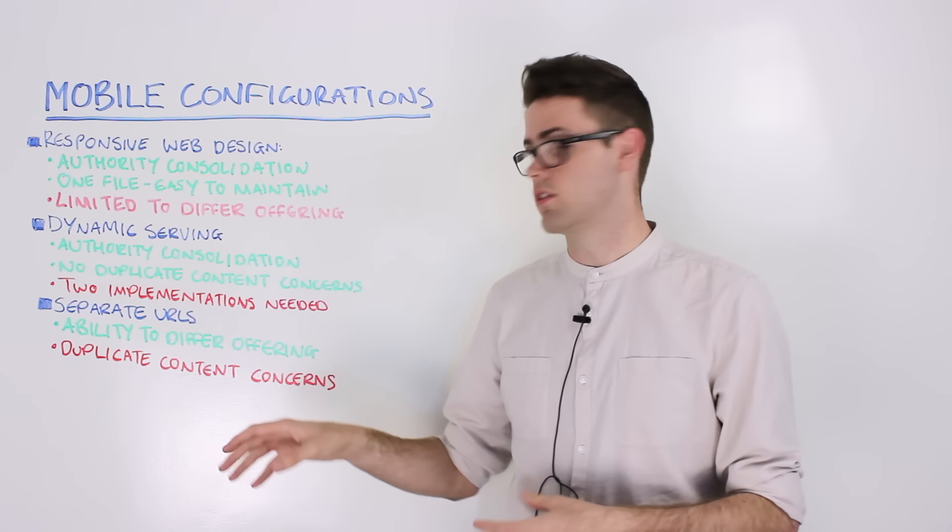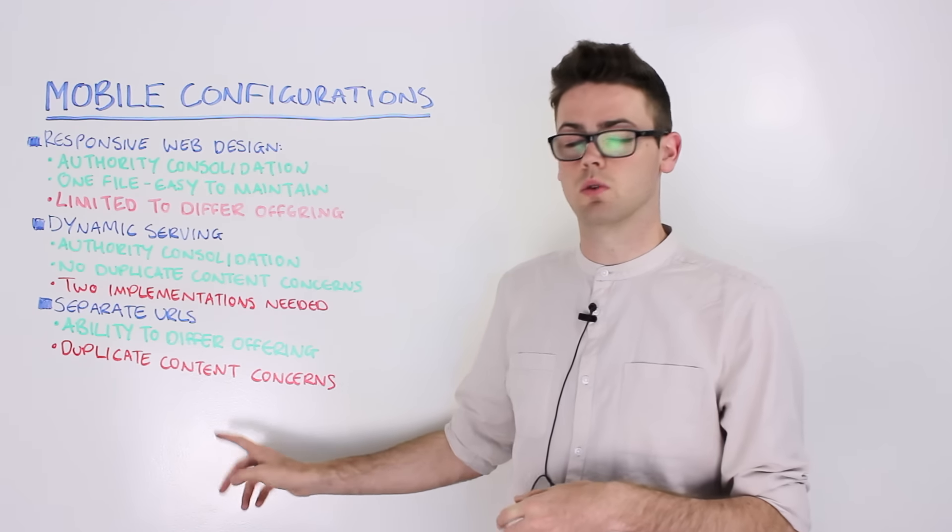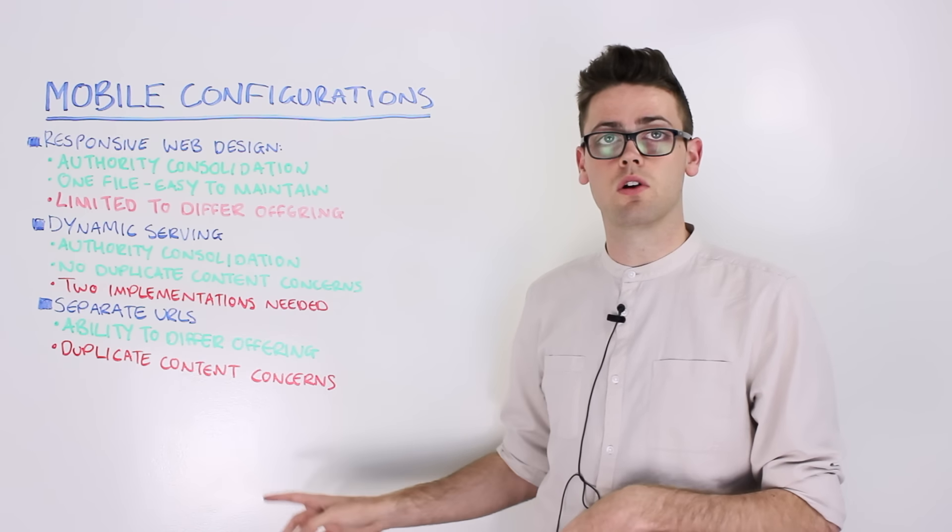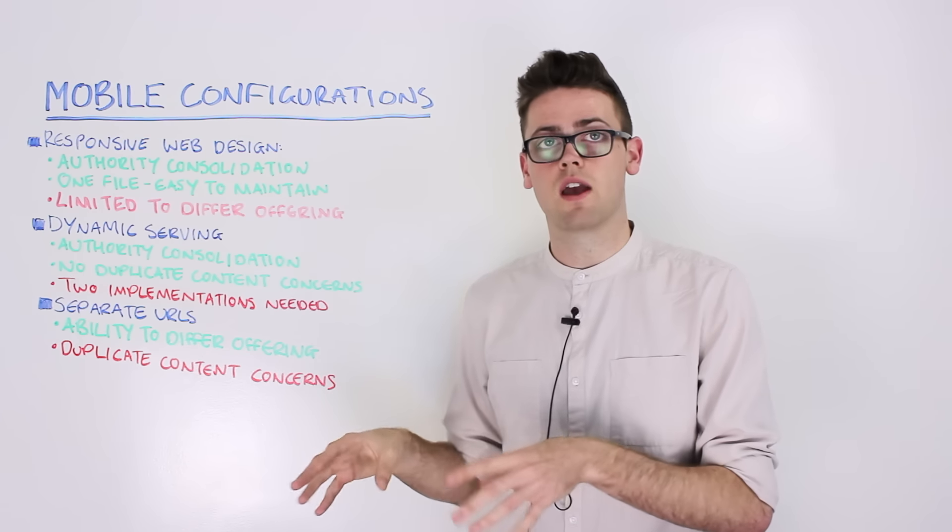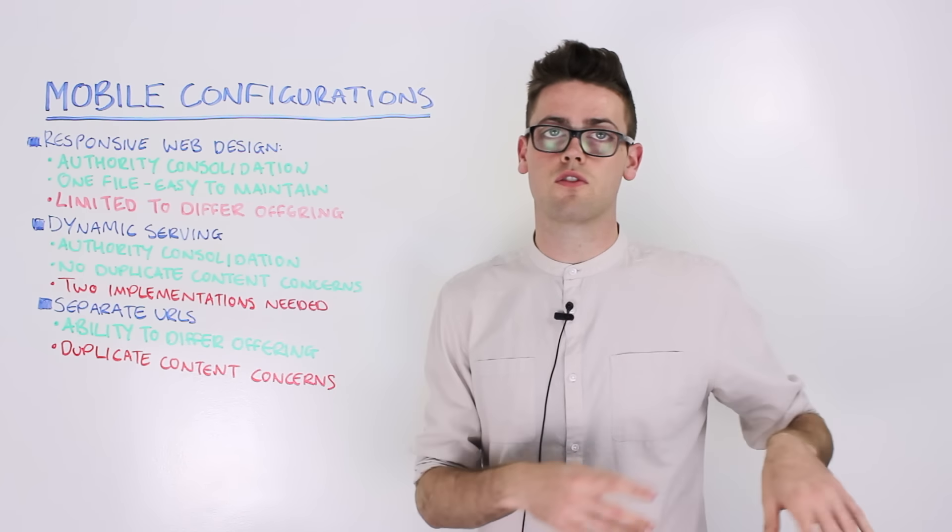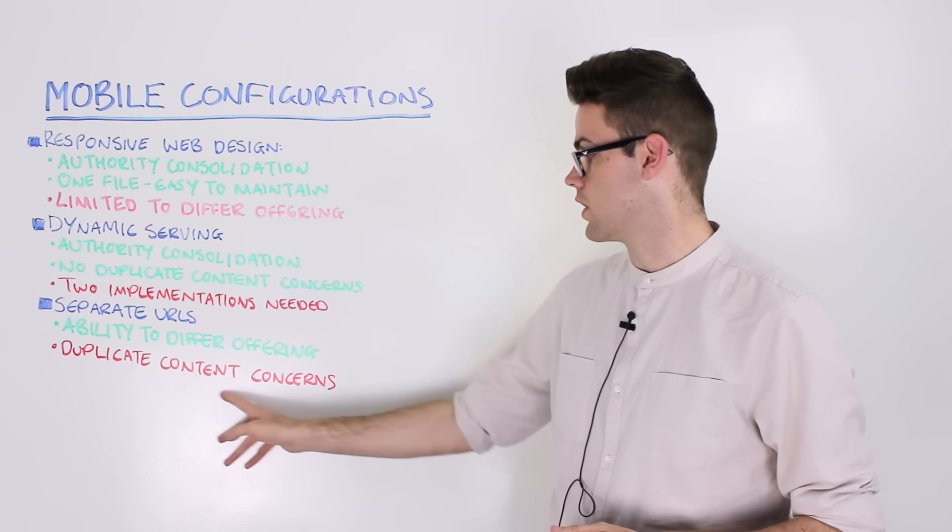And on the mobile equivalent of that desktop page, you need to have a canonical tag. The canonical tag will tell Google that any link juice, any content on this page should be passed back through to the desktop equivalent. And this would remove the duplicate content concerns.